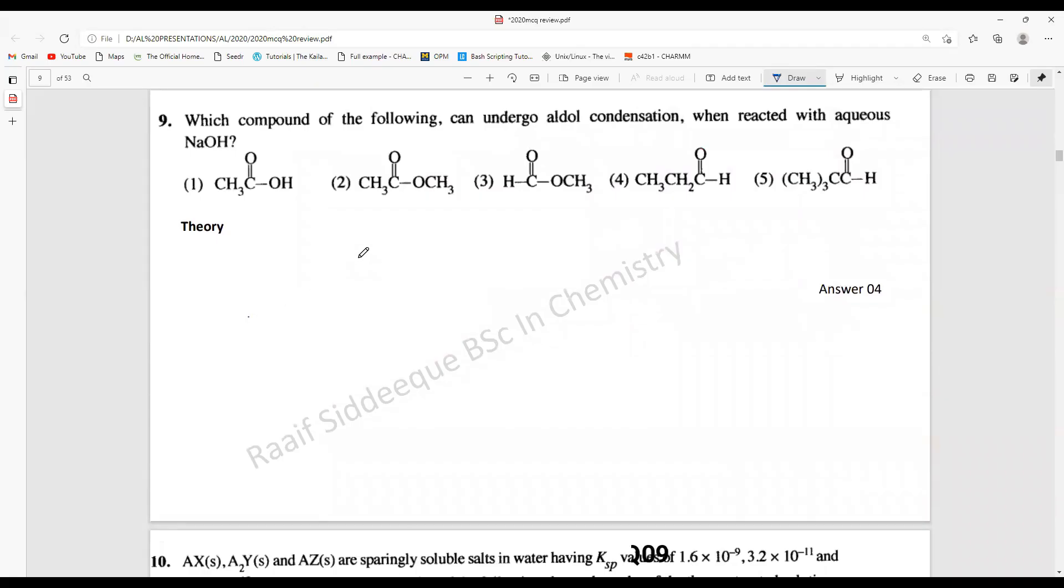So which of the compound can undergo aldol condensation when reacted with aqueous NaOH? This is a straightforward theory question. Aldol condensation in general can happen for aldehydes which have alpha hydrogen.